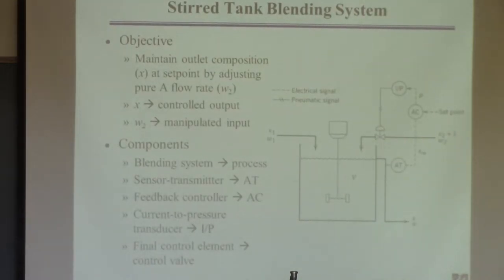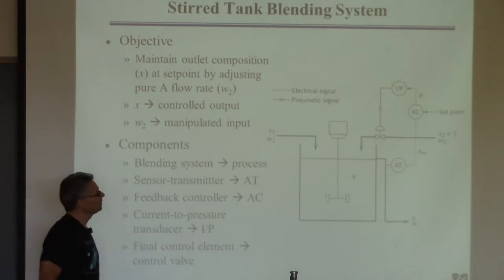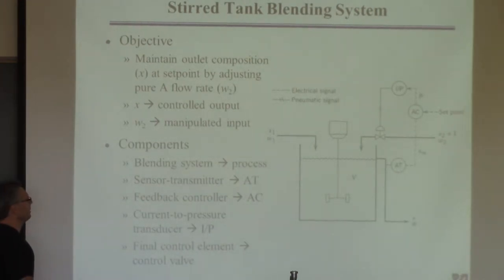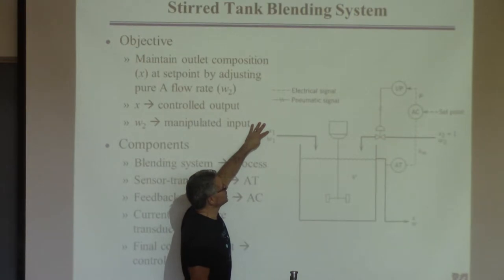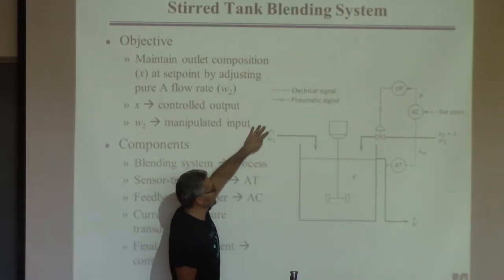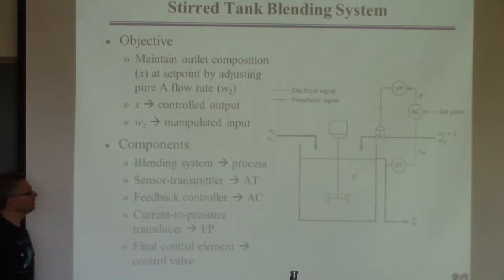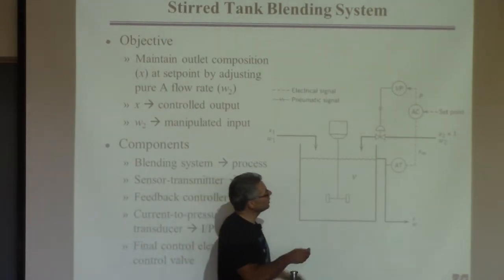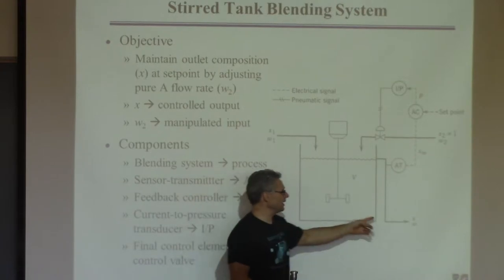This is the blending system example from the book. We have a stream coming in that we have no control over — it has some mass fraction of a component and some mass flow rate. Our goal is to blend this. It's a mixture of A and B; this stream is pure A. We want to mix in pure A so that we get the desired composition out of the tank — for example, to get the right reactant composition before sending it back to a reactor.